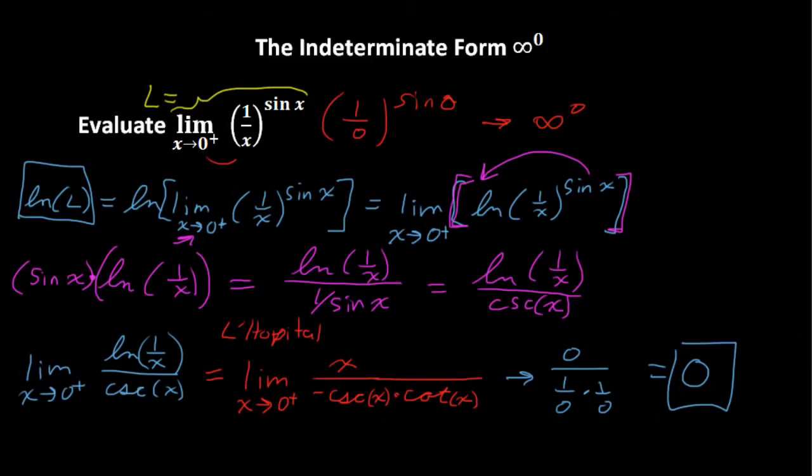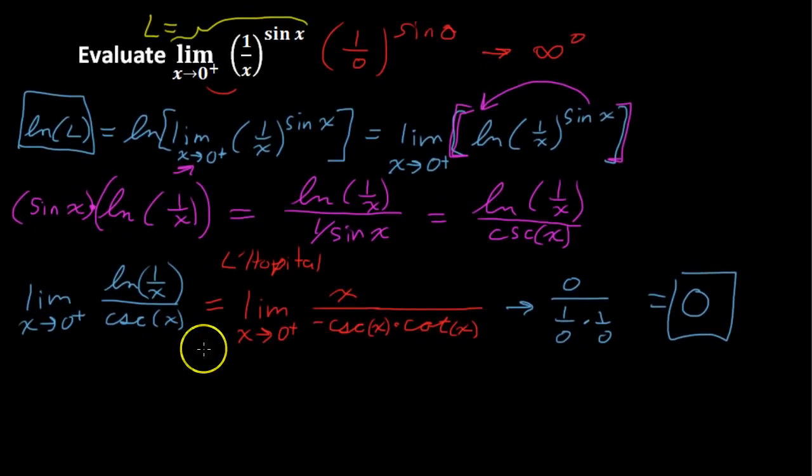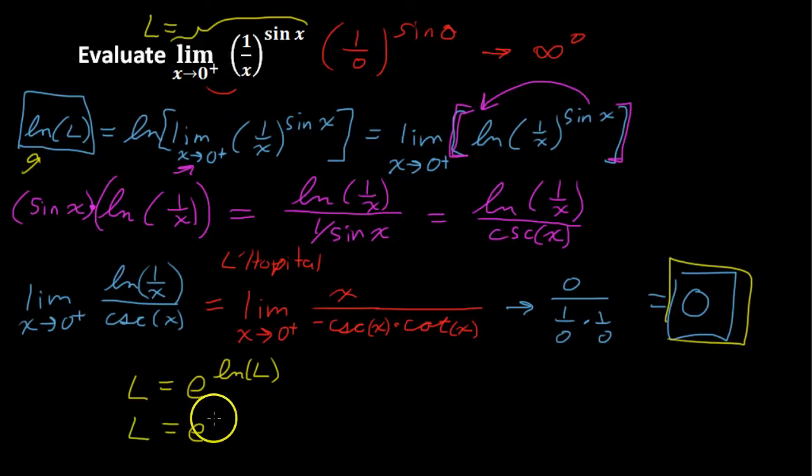But now we have to decide, how do we get back to L? This is what we want is L, the limit of our original function. Well, there's a property of logarithms or of the natural base E and that says that L equals E to the natural log of L. So L equals E to this, because the natural log of L is 0. So E to the 0 power and that is 1.